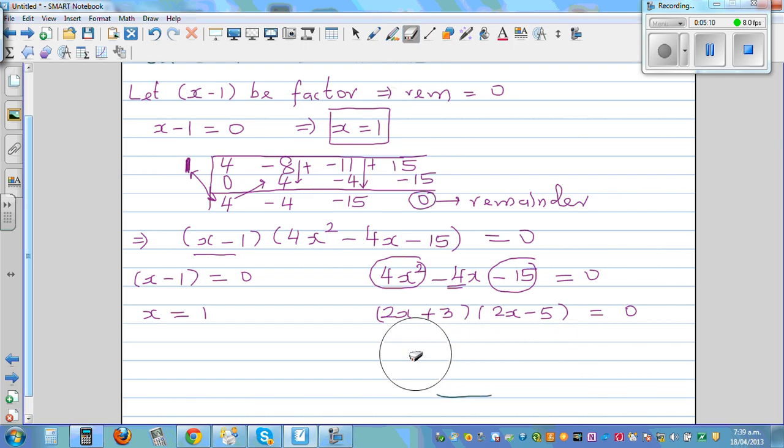So now you can set each of them equal to 0. You can say 2x plus 3 equal to 0, or you can also say 2x minus 5 equal to 0. So adding minus 3 to both sides, you can say 2x is equal to negative 3. And dividing both sides by 2, x is negative 3 over 2, which is minus 1.5. And this is x is equal to, so 2x is equal to 5. By adding 5 to both sides and dividing by 2, this is 2.5.